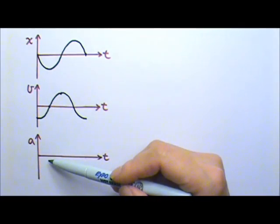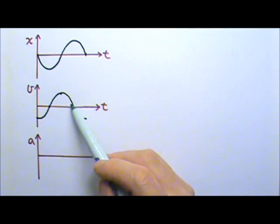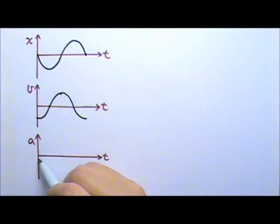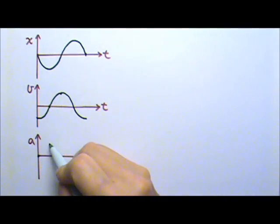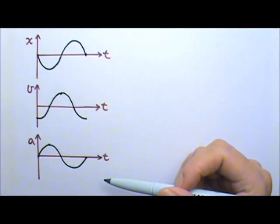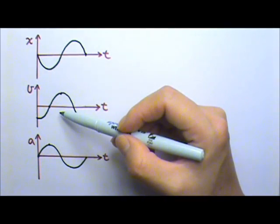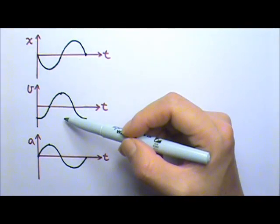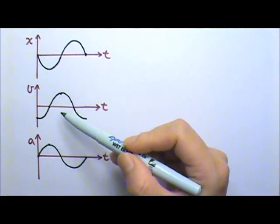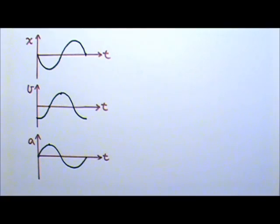Now, how do we find the acceleration from the velocity graph? The acceleration is the slope of the velocity versus time graph. The slope over here is zero, so the acceleration is zero. The slope over here is positive. Once we know these two points, we know the graph must be a sine graph. For those who have taken calculus: the position is a negative sine function, its derivative gives velocity as negative cosine, and the derivative of negative cosine gives a positive sine for acceleration. But you can also just use slope without knowing derivatives.